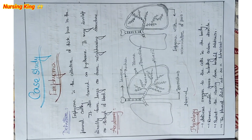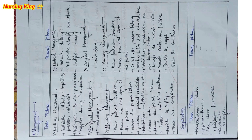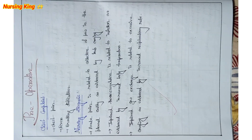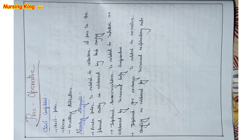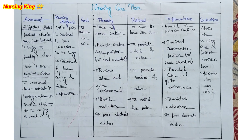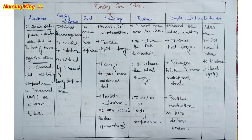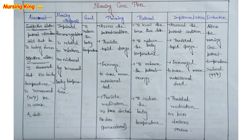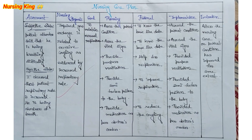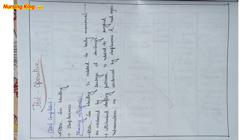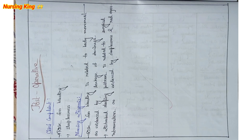In the surgical care plan, you have to mention the disease condition — including causes, definition, signs and symptoms, diagnosis, evaluation, nursing management, and medical management. Then in the surgical care plan you have to mention the preoperative care plan and postoperative care plan, including the chief complaints for both preoperative and postoperative phases.